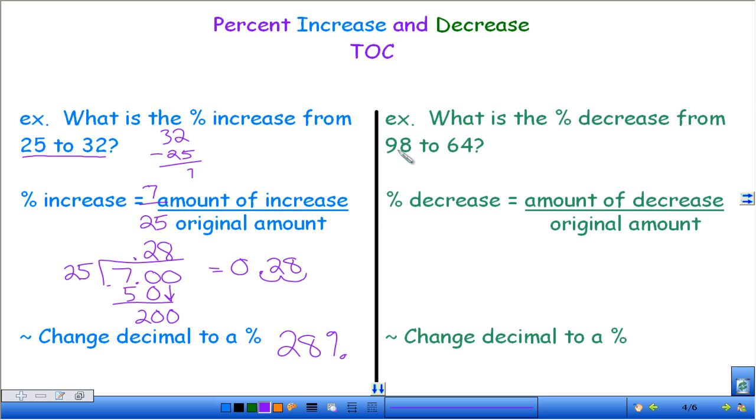All right, so decrease. Go ahead and write this down as your first example. So if I start at 98 and I drop down to 64, I'm decreasing that number. So the formula is pretty similar, except it's the amount of decrease over the original amount. So I'm starting at 98. That's my original amount. And my amount of decrease, well, I need to figure out how much this went down. So again, we're going to subtract these. And we get 34.